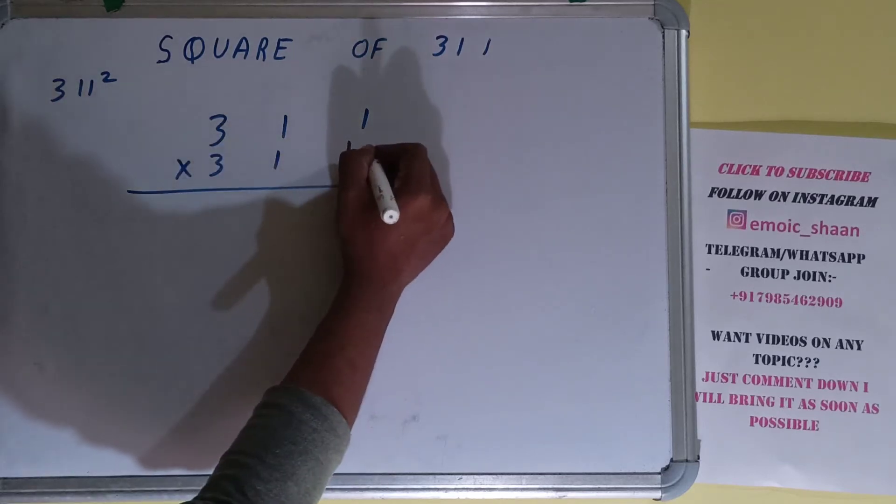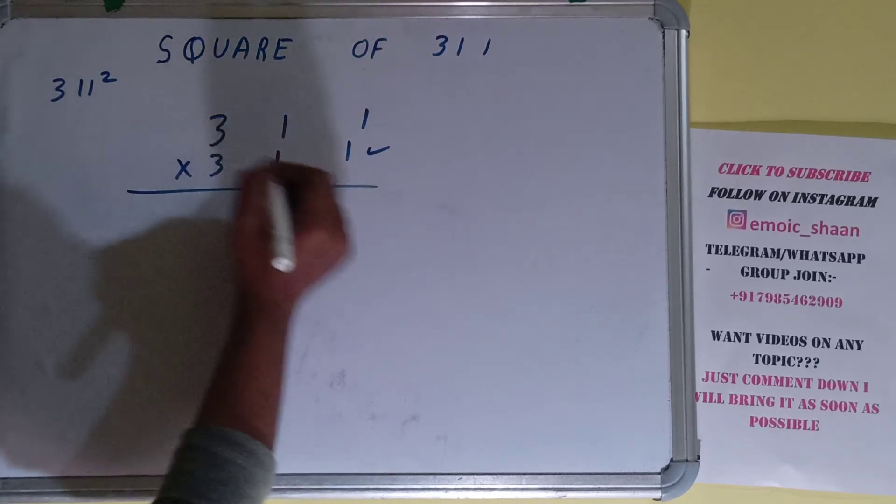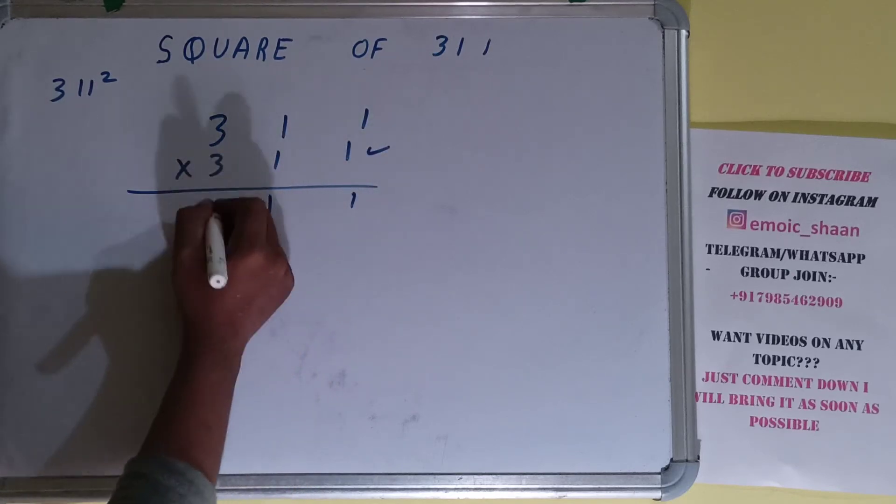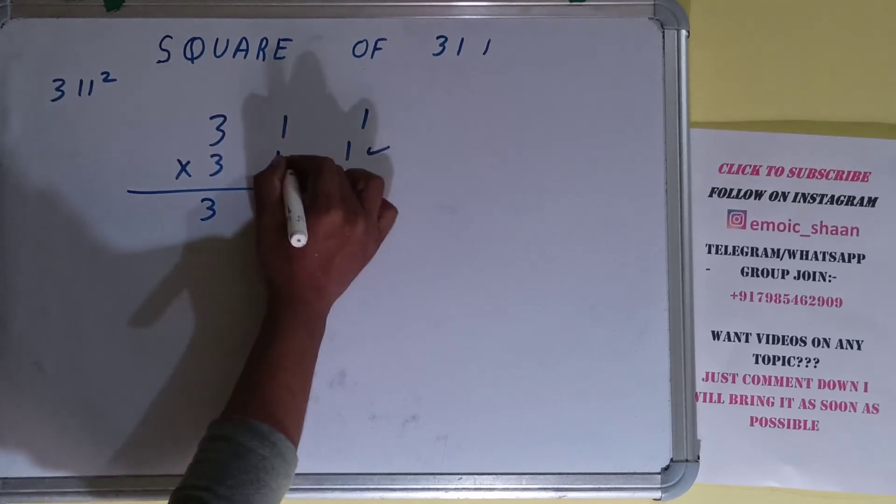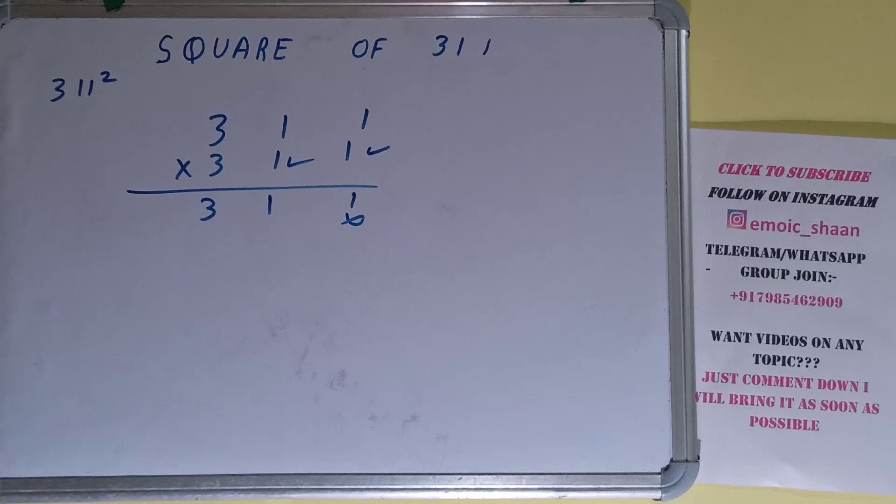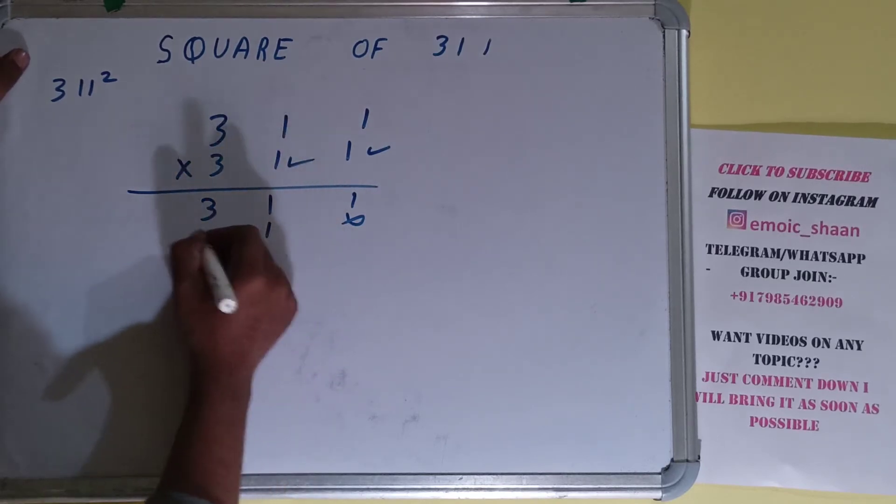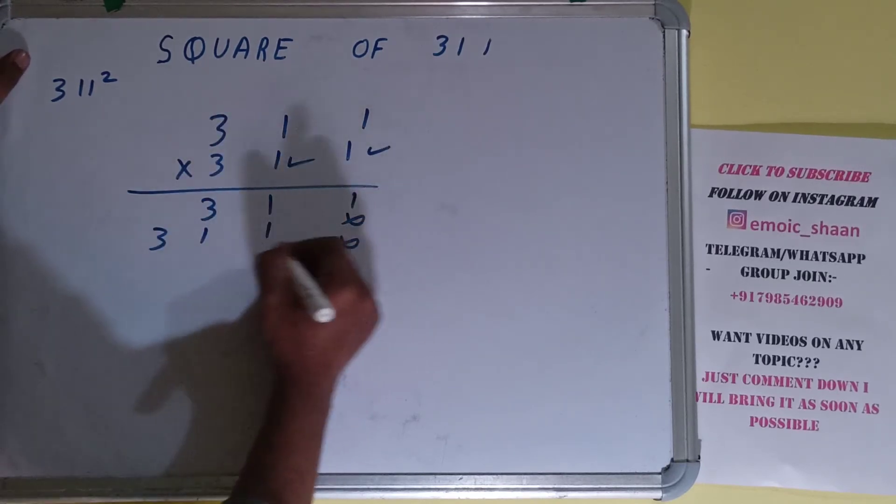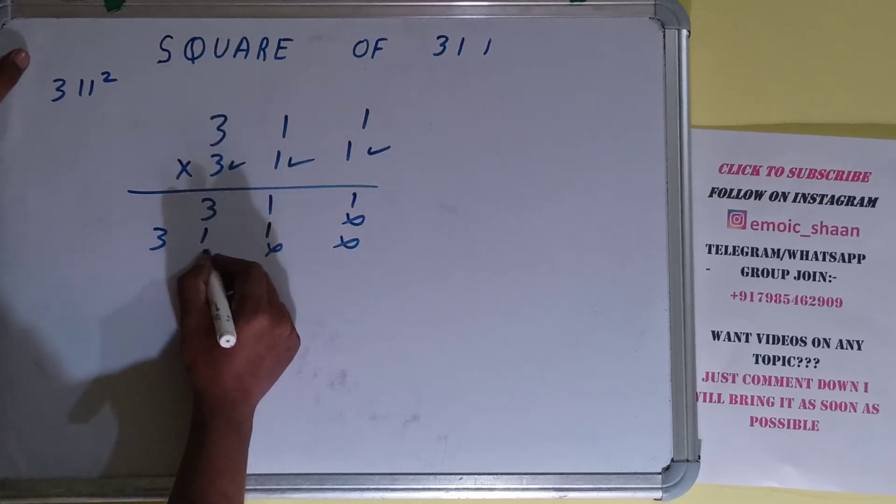So let's start with this. One into any number is that number, right? So one into one is one, one into one is one, and one into three is three. Now for this one also the same condition applies, so we can just write one, one, three. For this three we need to multiply: three ones are three.